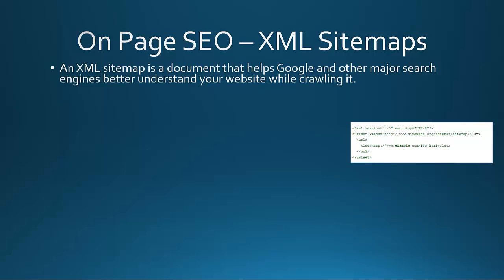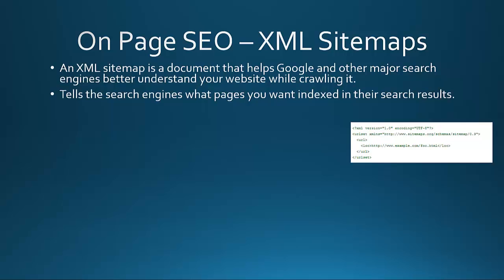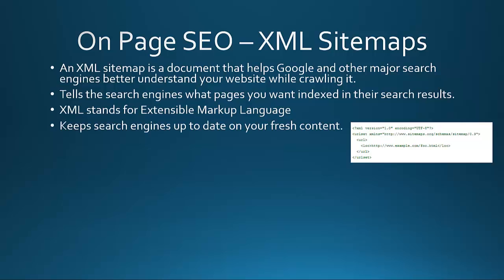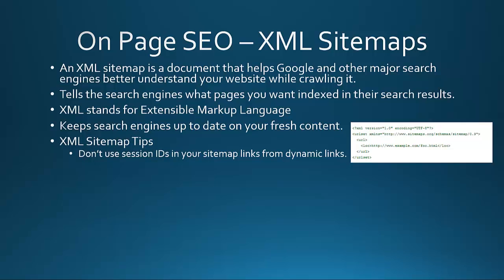Some more on-page SEO methods include XML sitemaps. An XML sitemap is a document that helps Google and other search engines better understand your website while crawling it. It tells the search engines what pages you want indexed in their search results. XML stands for Extensible Markup Language. It keeps the search engines up to date on your fresh content.